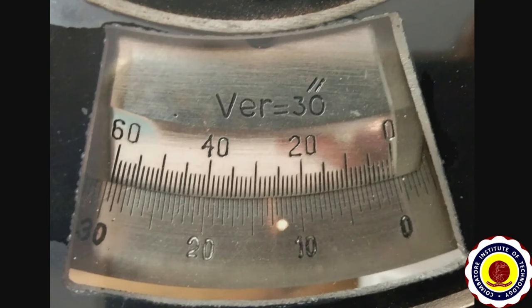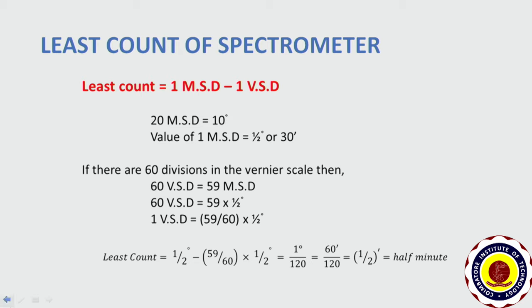The vernier scale consists of 60 divisions. The 60 vernier scale divisions will be equal to 59 main scale divisions. So one vernier scale division will be equal to 59/60 of a main scale division. Since the value of 1 main scale division is half a degree, if we calculate the least count, we get a value of half a minute.